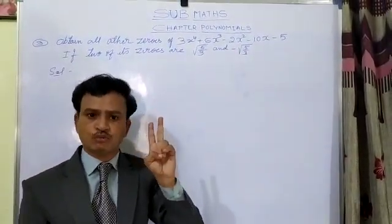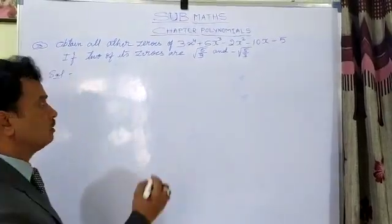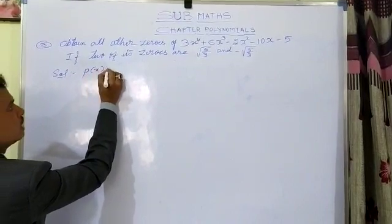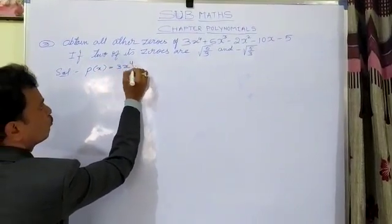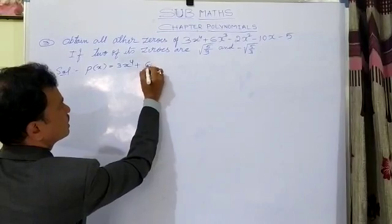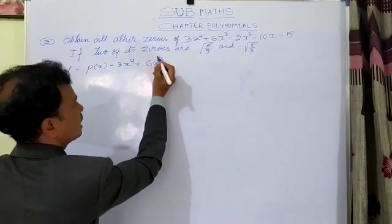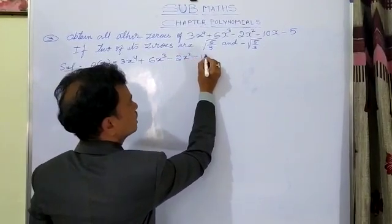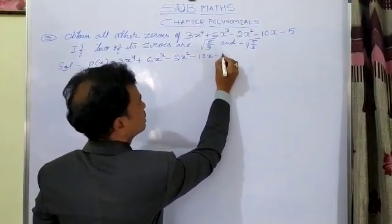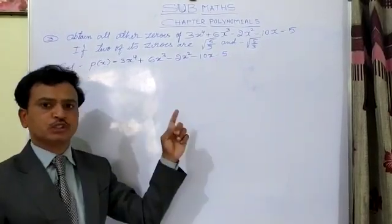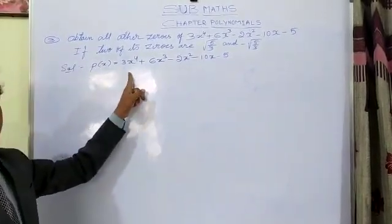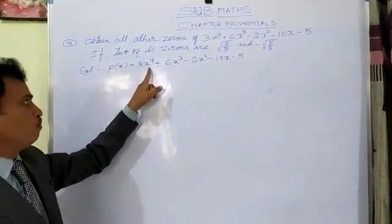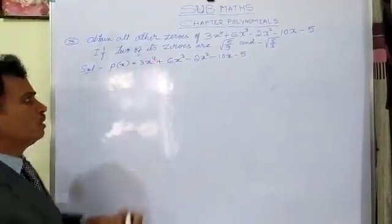Now let us see. P(x) is equal to 3x to the power of 4 plus 6x³ minus 2x² minus 10x minus 5. This is the question. The highest degree of x is 4.